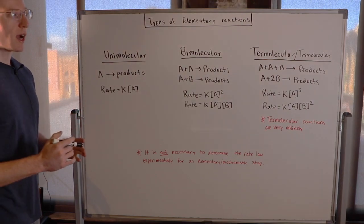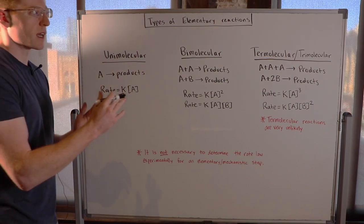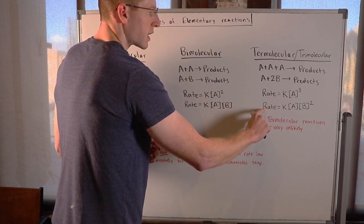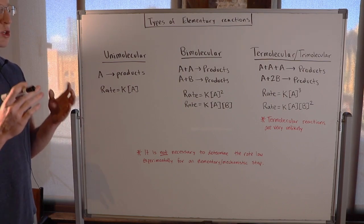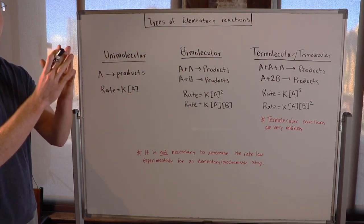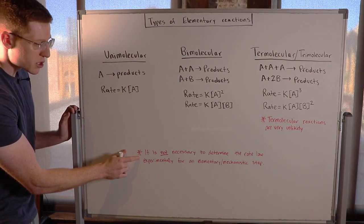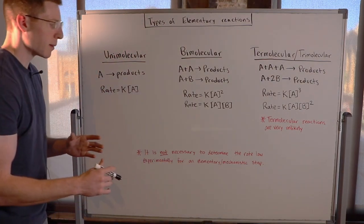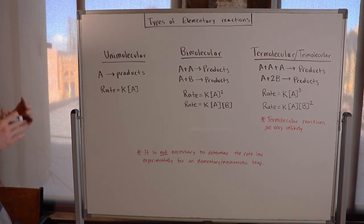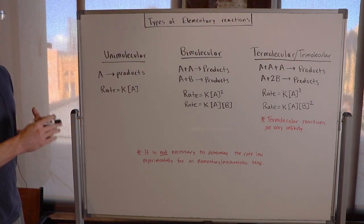In a termolecular or trimolecular elementary reaction, three things must collide in 3D space at the right orientation with enough kinetic energy to turn into products. Two examples: the first has rate law K times the concentration of A cubed; the second has rate law K times the concentration of A times the concentration of B squared. Termolecular reactions are very unlikely to occur because three molecules perfectly colliding in three-dimensional space in the right orientation with enough kinetic energy is very improbable. Also, it is not necessary to determine the rate law experimentally for an elementary or mechanistic step — we can write these rate laws directly. For an overall chemical reaction, however, you do have to determine the rate law experimentally.